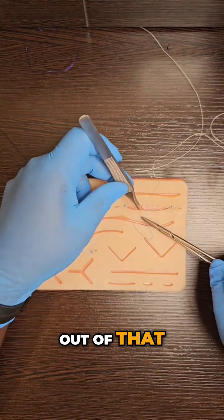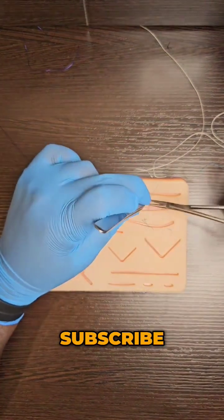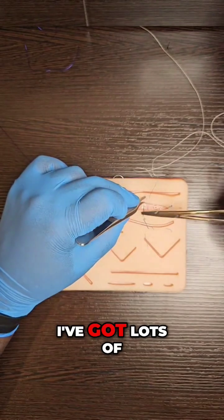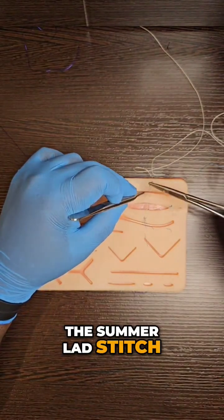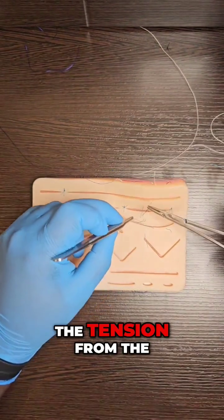If you love it, subscribe. I've got lots of tips for you. This is the locking horizontal mattress, the summer lad stitch, and this is just going to take out the tension from the middle of this wound.